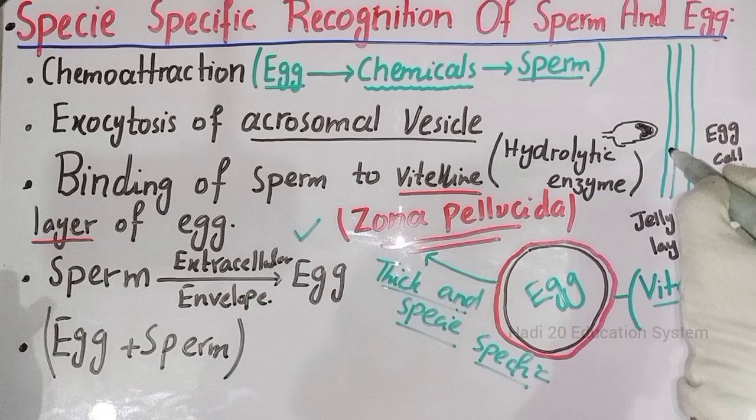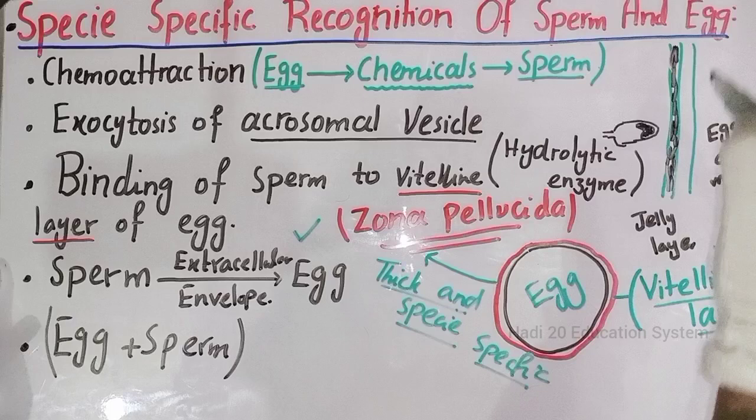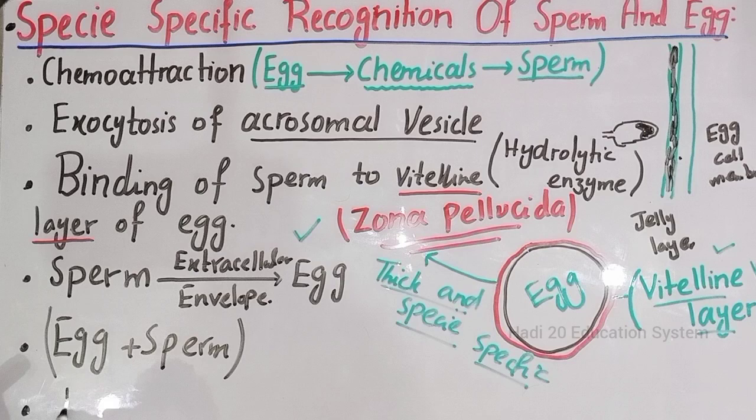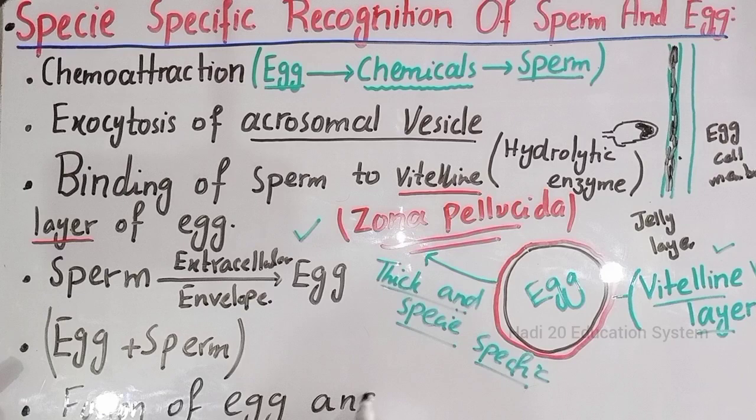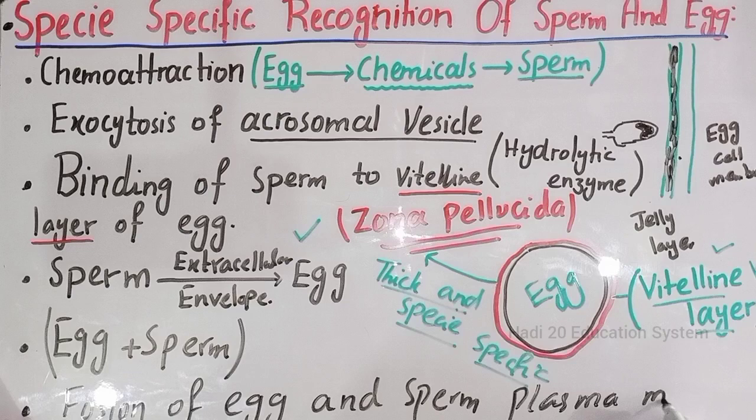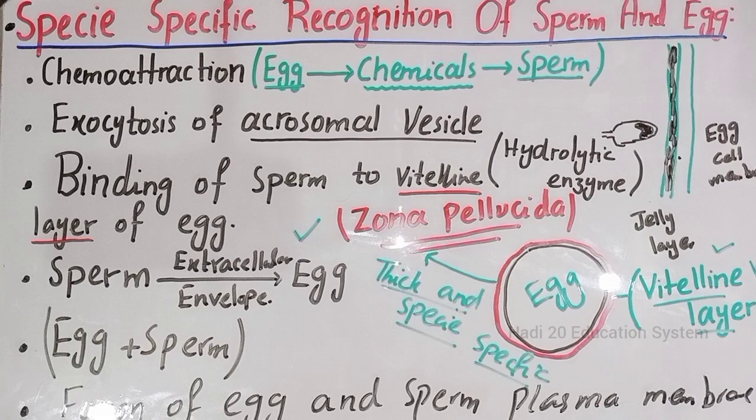Once the jelly-like layer is dissolved, the egg membrane and the sperm membrane come together — fusion of egg and sperm plasma membrane. Is that clear? So here we conclude today's lecture on species-specific recognition. Soon we will start another lecture on external fertilization in sea urchins. Is that clear? If you have any questions, please ask in the comment section. Stay connected and Allah Hafiz.